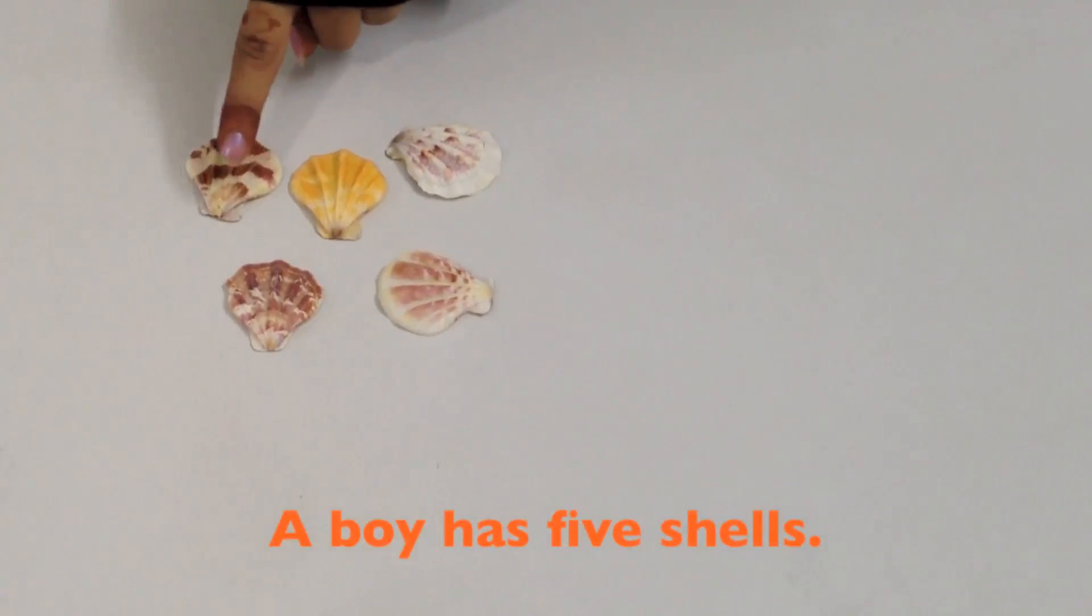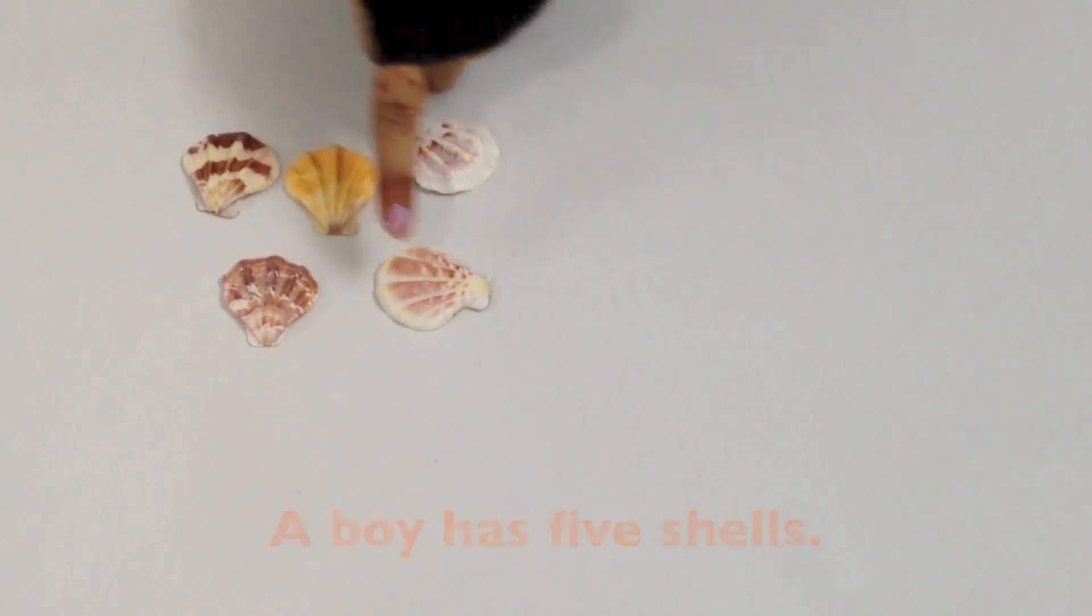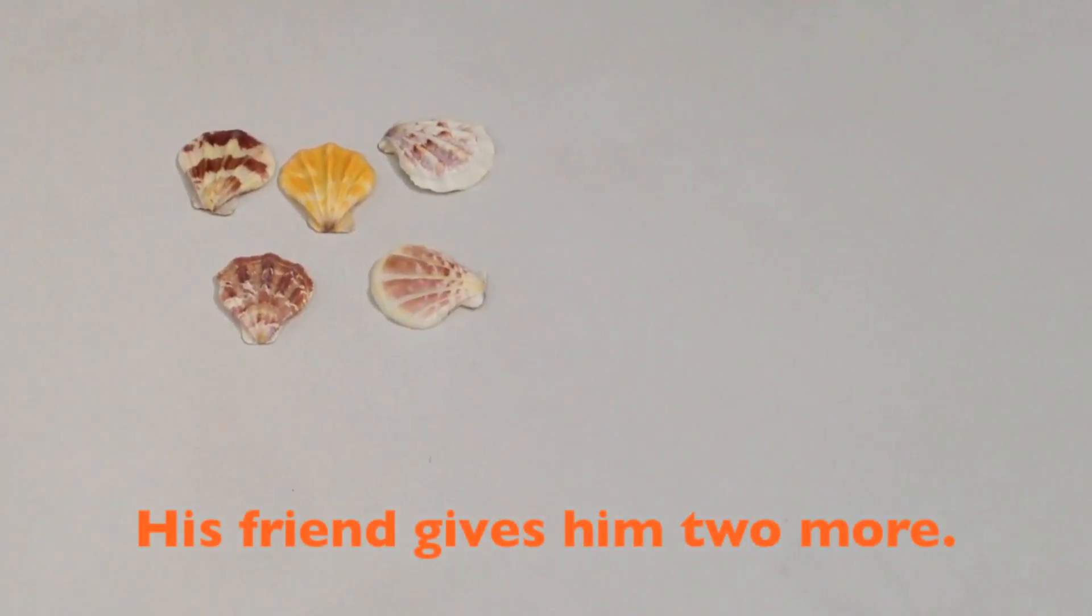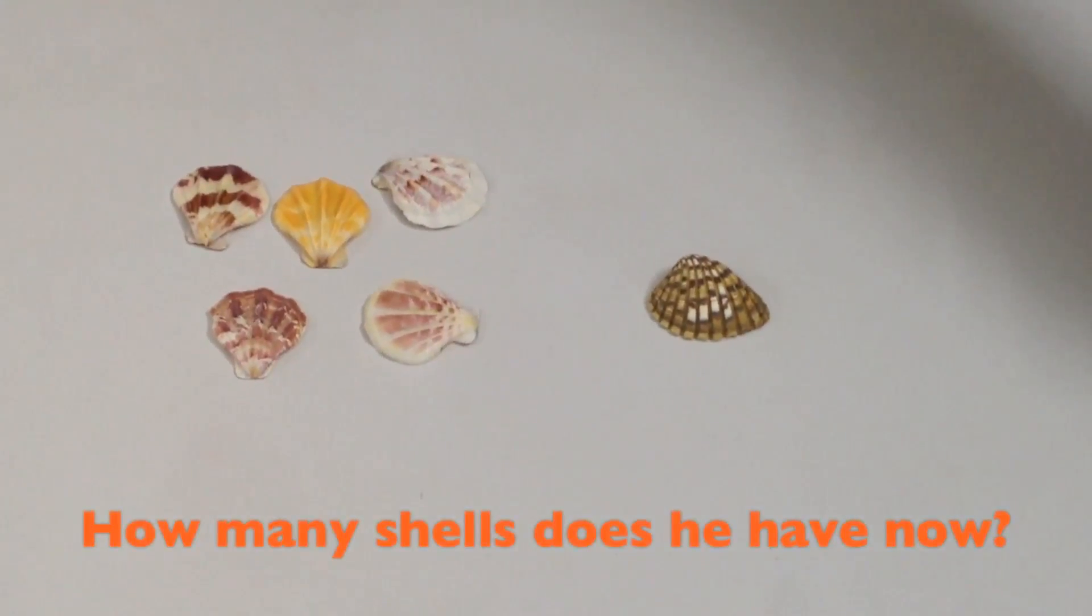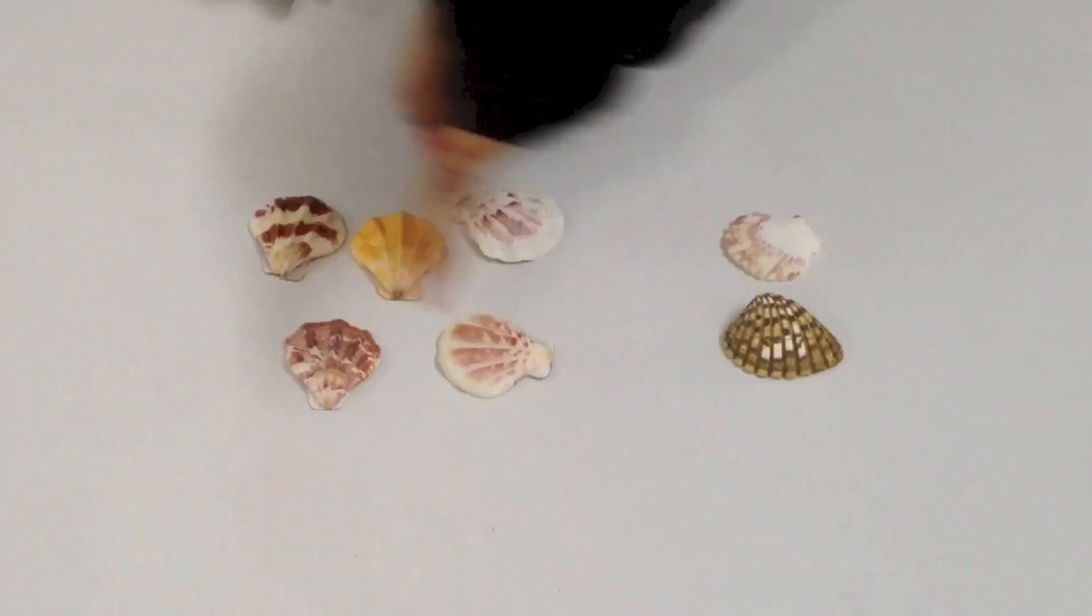One boy has five shells: one, two, three, four, five. His friend comes and gives him two more shells.